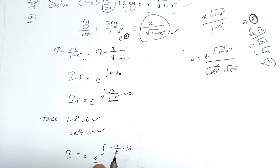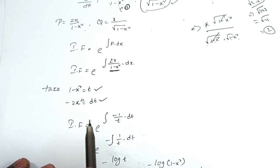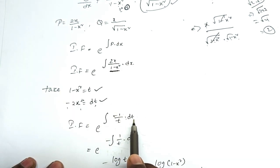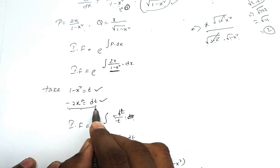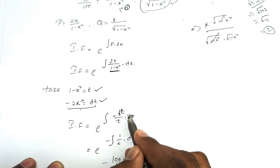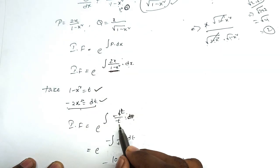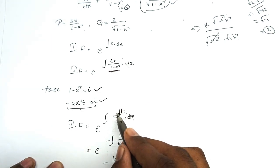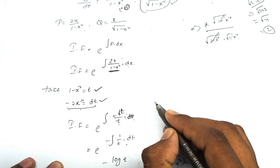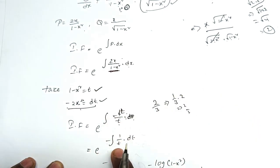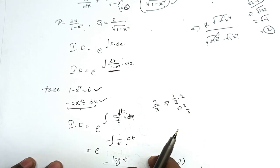The integrating factor becomes e^∫(2x dx / (1 - x²)). Substituting, 2x dx = -dt and the denominator becomes t, so we get e^∫(-dt/t) = e^(-∫(1/t)dt). From the previous class, ∫(1/x)dx = log x, so ∫(1/t)dt = log t. Therefore the exponent becomes -log t.